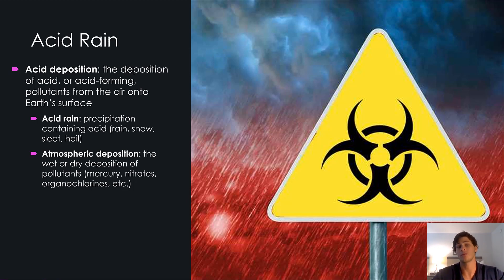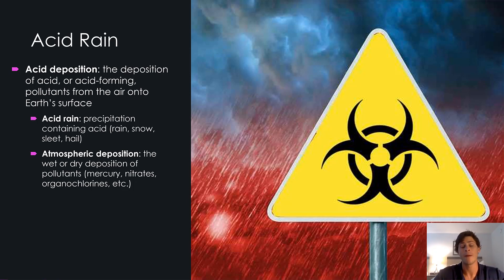Specifically, acid rain refers to precipitation — any kind of precipitation, be it rain, snow, sleet, or hail — containing acidic compounds, particularly sulfuric acid and nitric acid from those pollutants.